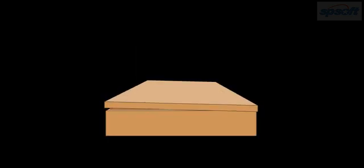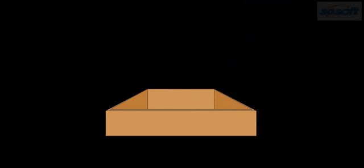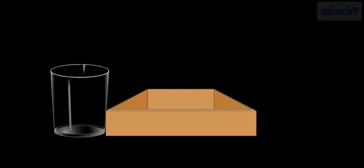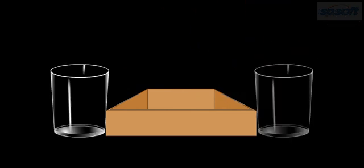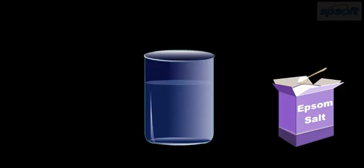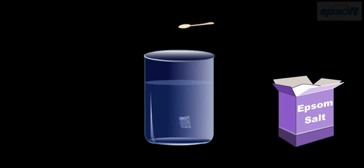Procedure: Remove the lid of the cardboard box. Place one glass tumbler each on both sides of the box. Be sure that the box is below the level of the glasses. Now, let us prepare a saturated solution of Epsom salts in a beaker. To make a saturated solution, mix as much of these salts in water as could get dissolved in it. Fill both the glasses with this saturated solution.